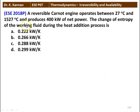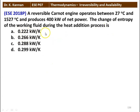The second question: a reversible Carnot engine operates between 27 degrees Celsius and 1527 degrees Celsius and produces 400 kilowatts of net power. The change of entropy of the working fluid during the heat addition process is — options: 0.222, 0.266, 0.288, and 0.299 kilowatts per Kelvin. The answer is 0.266 kilowatts per Kelvin.